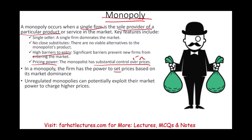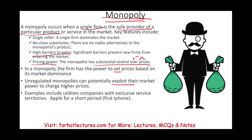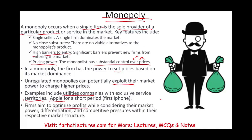Unregulated monopolies can potentially exploit their market and charge as high as they can. In some countries you have unregulated monopolies; in the US, we try to keep them under control. For example, Apple computers — with their first iPhone, for the first six months, Apple had a monopoly. If you wanted a smartphone, that was the only viable option. They were a monopoly by default — they did not try to be a monopoly, they simply had no competition. Then Samsung came along and started to present other alternatives. Firms in a monopoly aim to optimize their profit while considering their market power and competitive pressure.